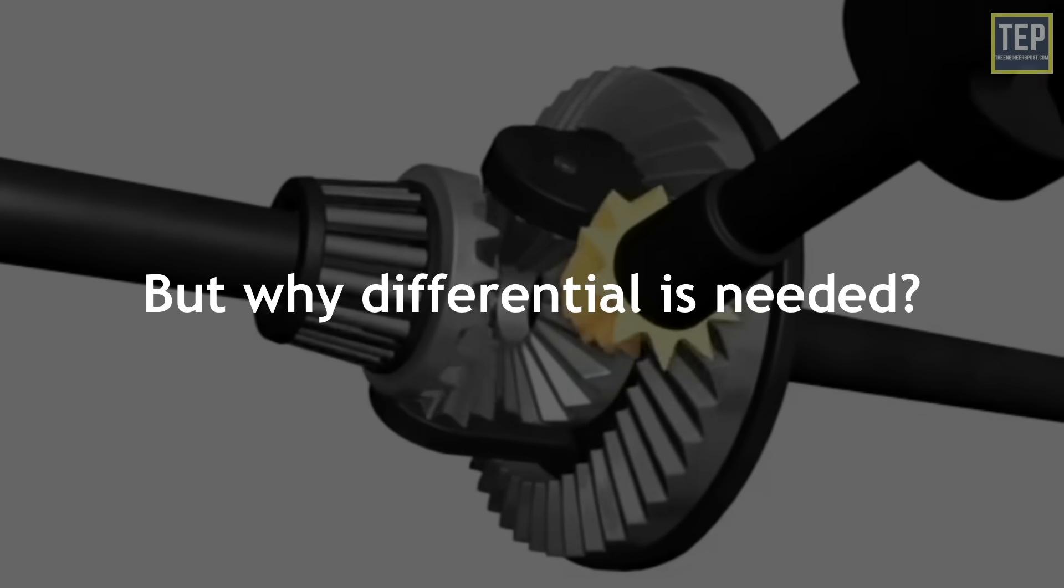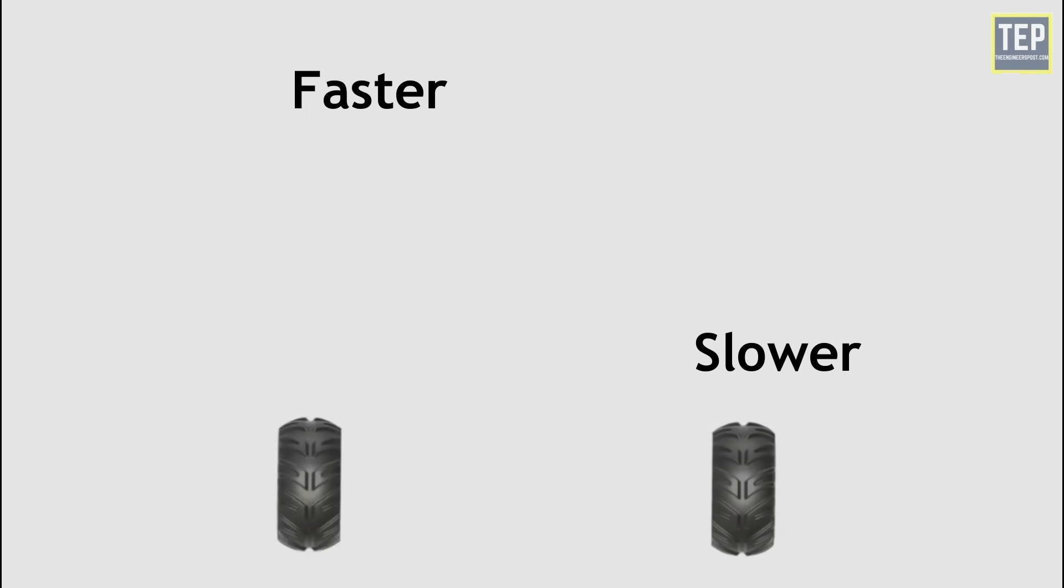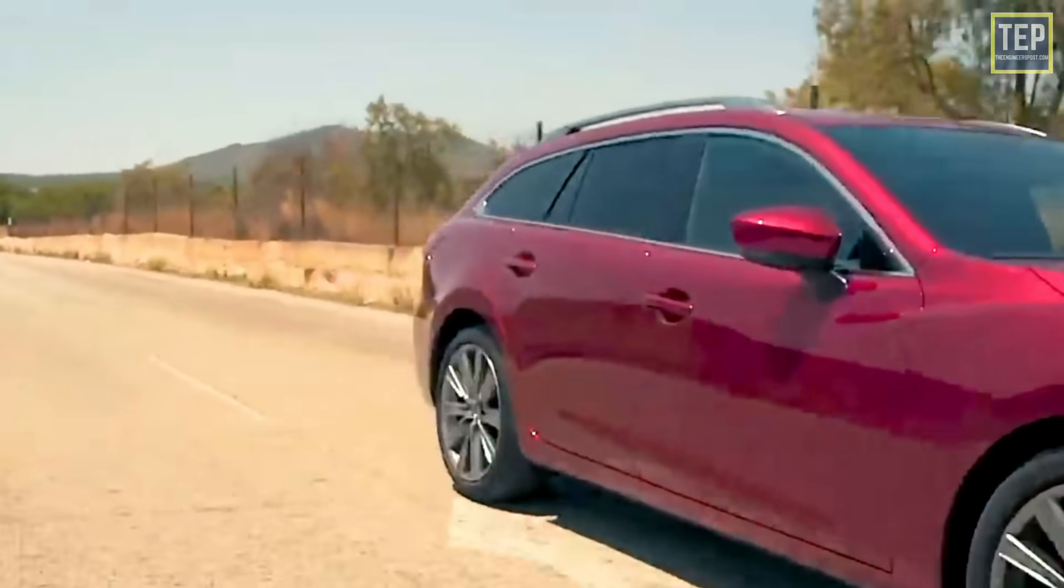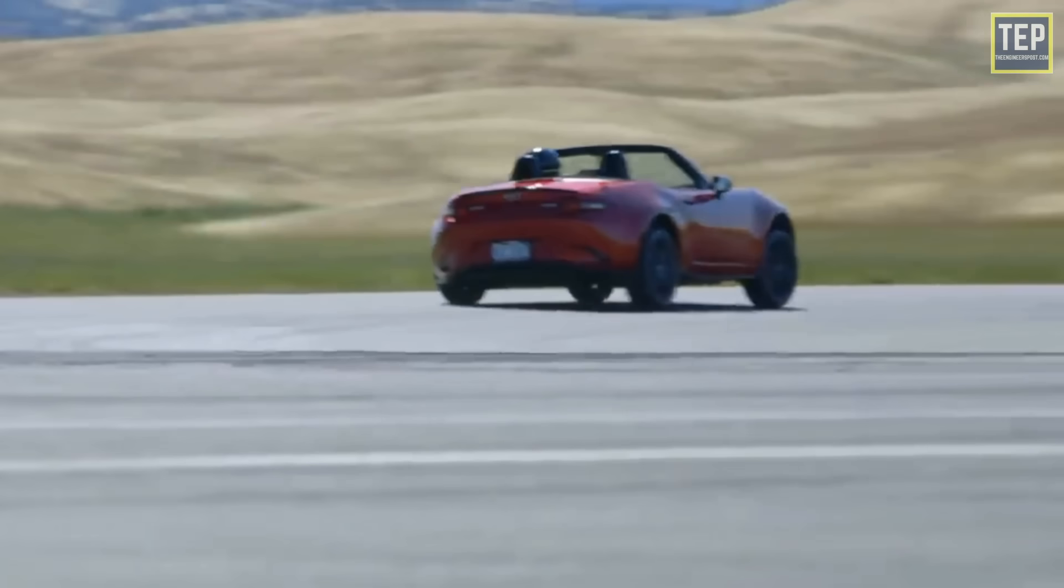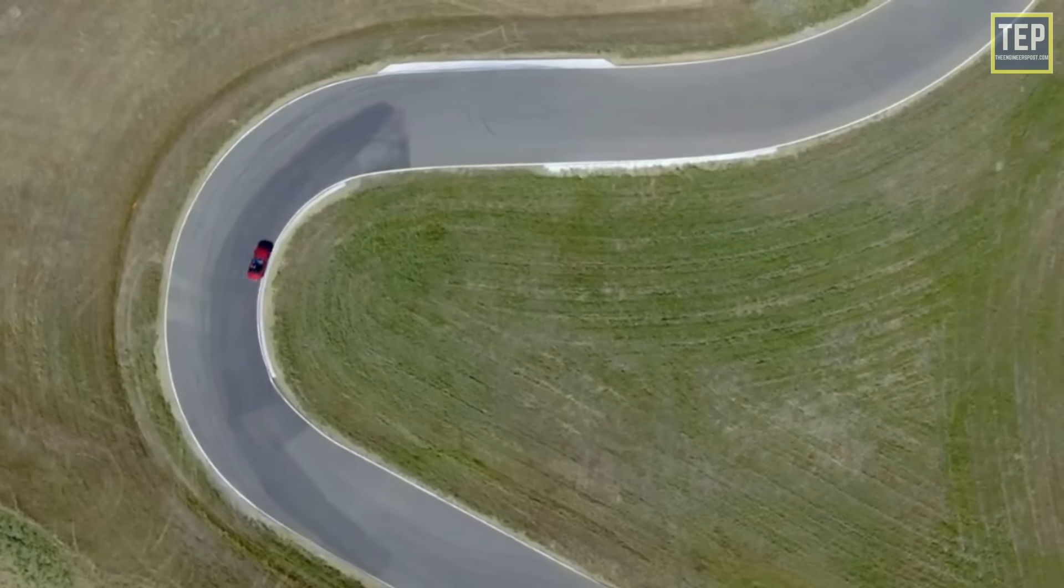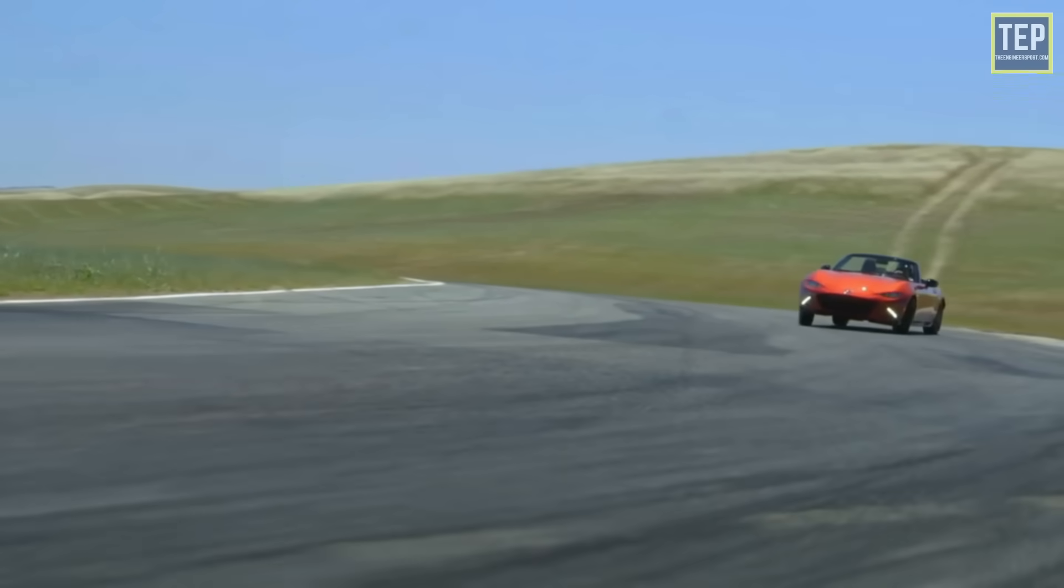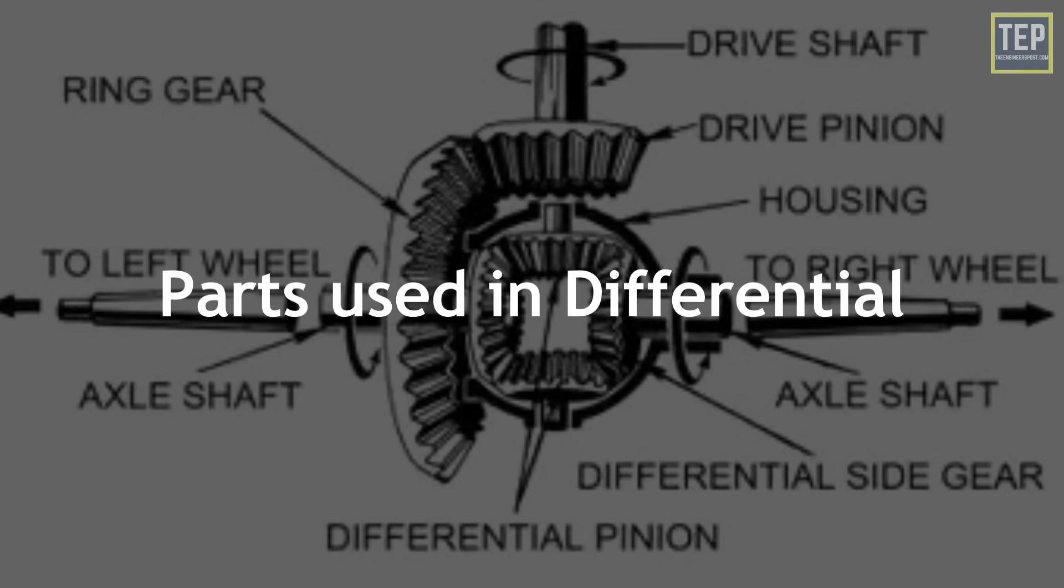But why is a differential needed in a vehicle? When the vehicle is turning, the differential allows the outer wheel to rotate faster than the inner wheel. This is essential when the vehicle turns, causing the wheel to move outside the turning curve to roll further and faster than the other. The differential allows the wheels to rotate at different speeds, so the car can corner without putting excessive wear on the tires. If the axle does not allow the wheels to turn independently of each other, the tire of one wheel will be pulled across the ground.